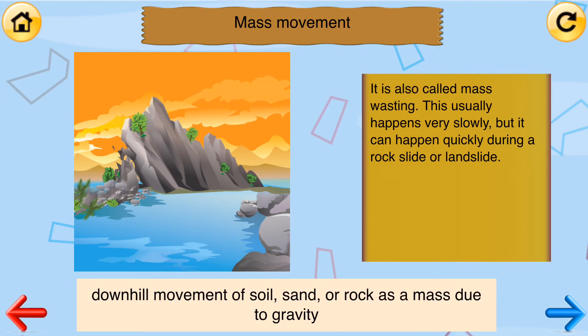Mass movement. Downhill movement of soil, sand, or rock as a mass due to gravity. It is also called mass wasting. This usually happens very slowly, but can happen quickly during a rock or landslide.